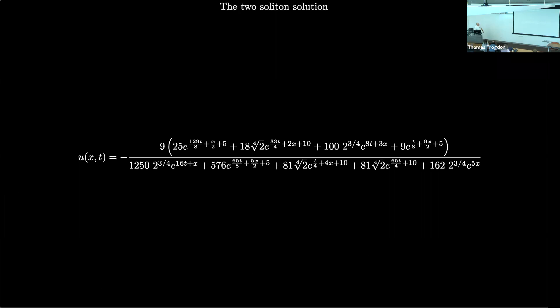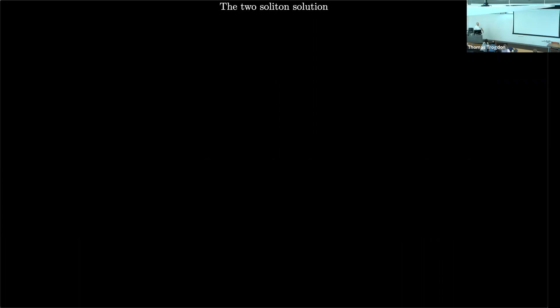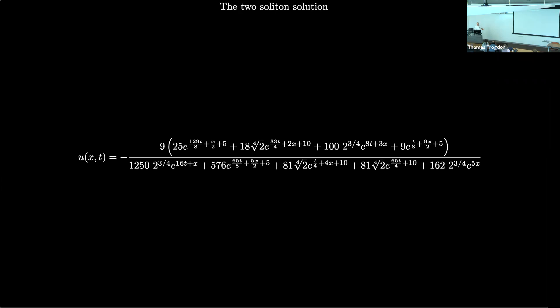You might ask: wouldn't it be great if we could see a formula that exactly encapsulates all of the features of that movie? And there it is — you can see all of the features of the movie from this explicit formula for the solution.